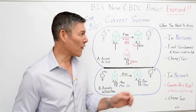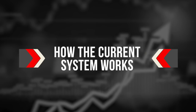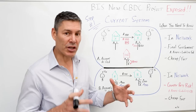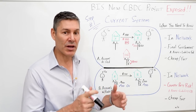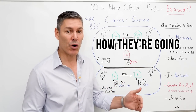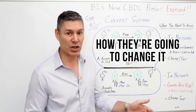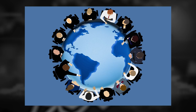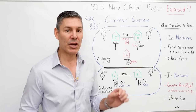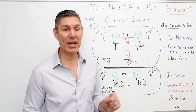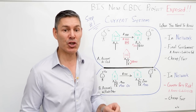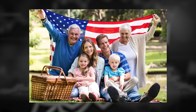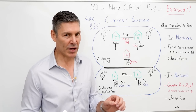Step number one: let's go over how the current system works. You need to get your head around this so you can understand how they're going to change it, and more importantly, how you can push back against the central planners and authoritarians to make sure your kids and grandkids enjoy the same freedom and liberty that you do. Let's get right into the whiteboard.